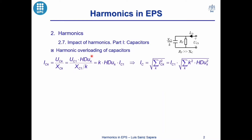Harmonics may produce an overloading of capacitors because the harmonic currents going through these capacitors depend on the harmonic voltages and the harmonic reactance of the capacitor, which decreases with the harmonic order of the voltages. So these harmonic currents flowing through the capacitor bank directly depend on the harmonic voltage distortion and the harmonic order.